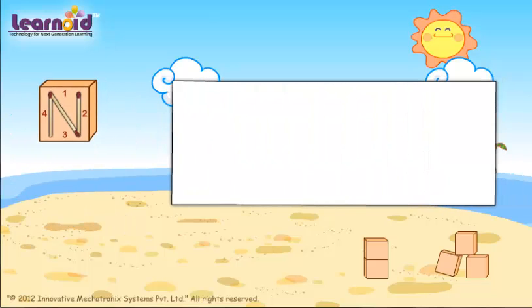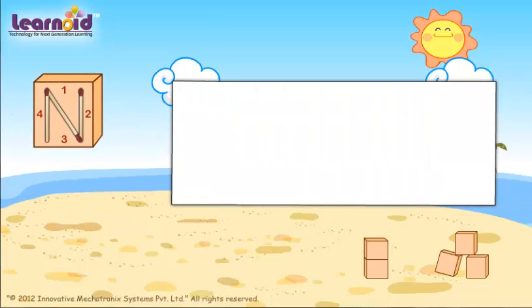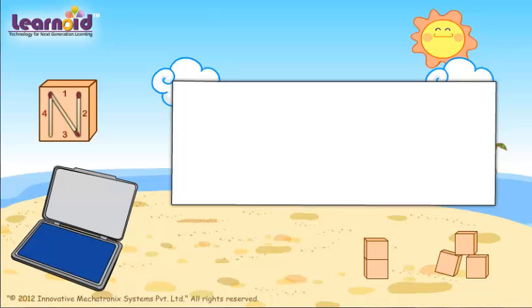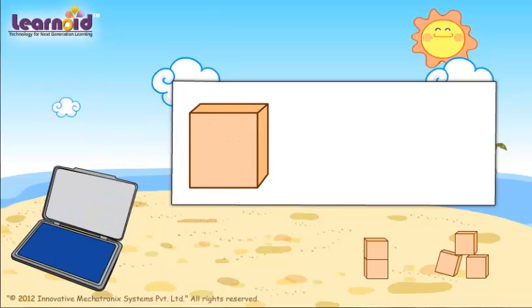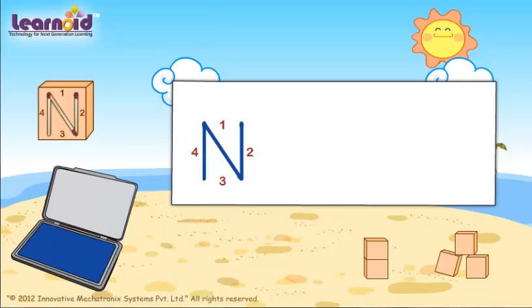On a piece of chart paper, they used the block and ink pad to print the shape. First, they printed with side one on top. The alphabet N got printed.